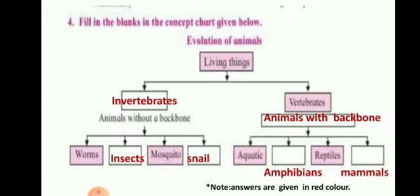Question number 4: fill in the blanks — the answer is a tree diagram or flow chart showing the evolution of living things. Invertebrates are animals without a backbone, and vertebrates are animals with a backbone. Examples of invertebrates: worms, insects, mosquitoes, snail. Examples of vertebrates: aquatic animals, amphibians, reptiles, and mammals.